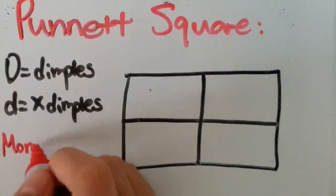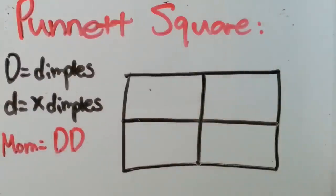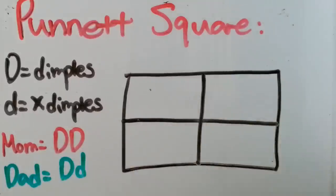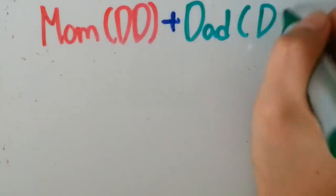For example, if your mom has dimples as homozygous dominant and your dad has dimples as heterozygous dominant, you will have dimples for sure no matter what.